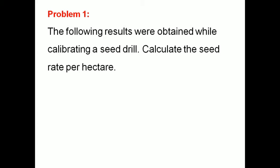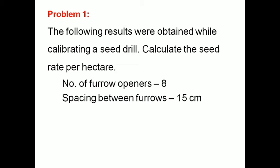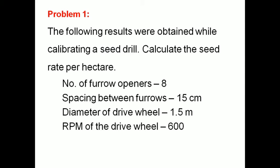There are some problems on this topic and we will solve them. The following results were obtained while calibrating a seed drill — calculate the seed rate per hectare in kg per hectare. Number of furrow openers: 8. Spacing between two furrow openers: 15 cm. Diameter of the transport wheel or drive wheel: 1.5 meters. RPM of drive wheel: 600 RPM.